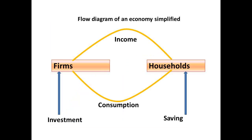This is a very simple way of looking at classical theory. Households gain income from firms in the form of wages and salaries, which they spend largely on consumption of goods and services. Some income is not spent on goods and services — this is shown as saving. This is compensated for by investment in firms, and that compensation would be determined in part by interest rates.